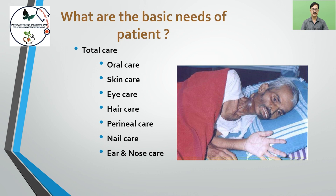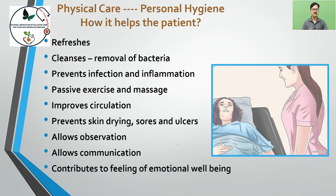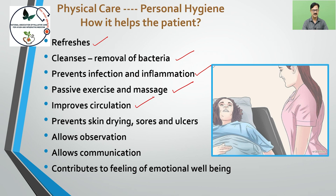What are the basic needs of a patient? Total care involves oral care, skin care, eye care, hair care, perineal care, nail care, and ear and nose care. Physical care and personal hygiene helps the patient by refreshing them, cleansing and removing bacteria, preventing infection and inflammation, providing passive exercise and massage, improving circulation, preventing skin drying, sores and ulcers, allowing observation and communication, and contributing to emotional well-being.